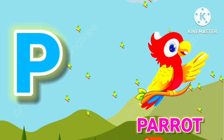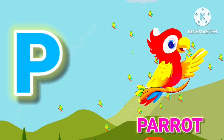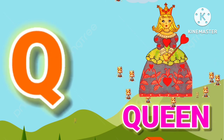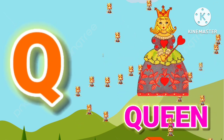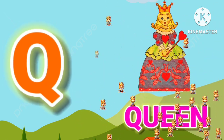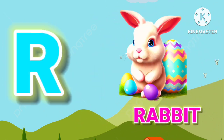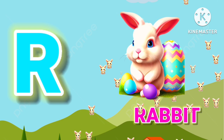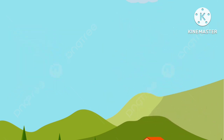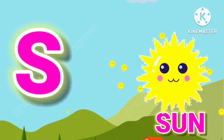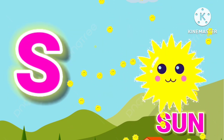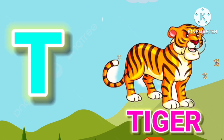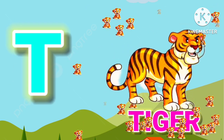P for parrot, Q for queen, R for rabbit, S for sun, T for tiger.